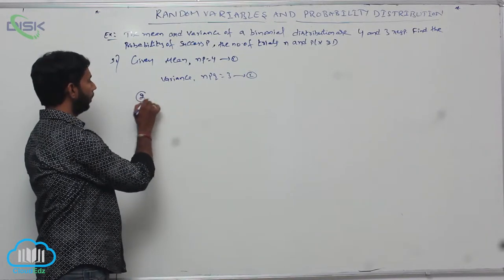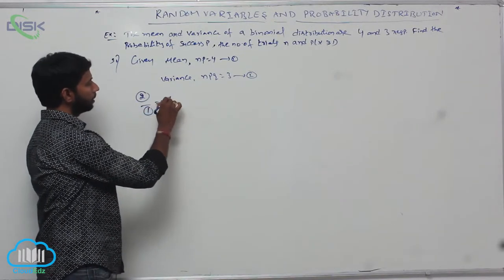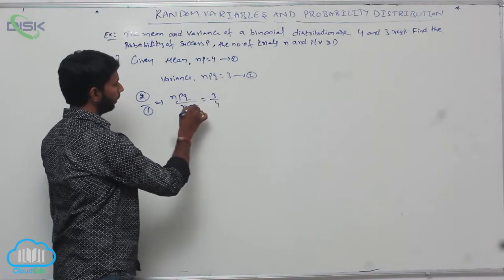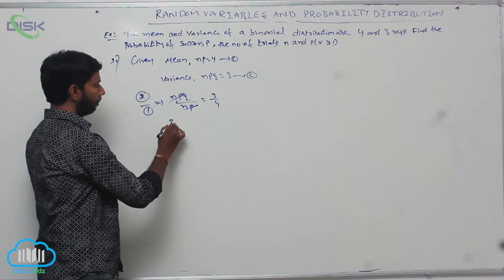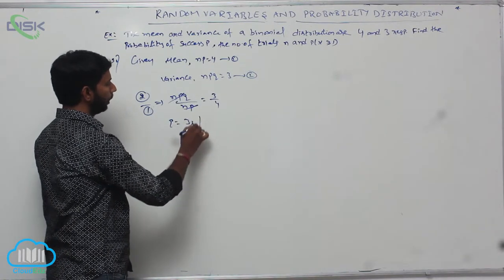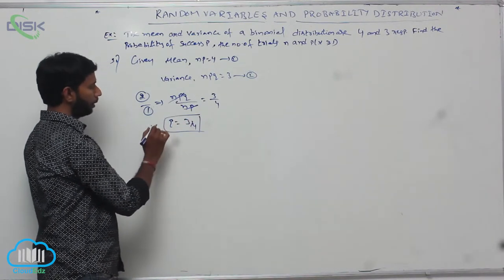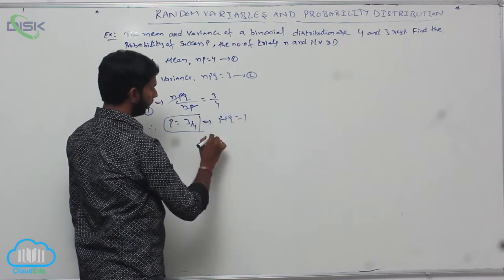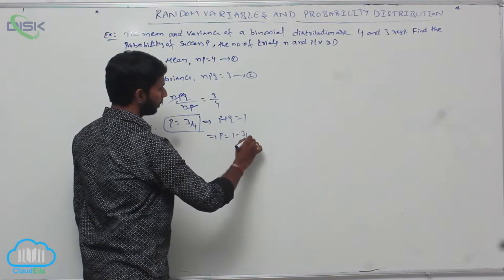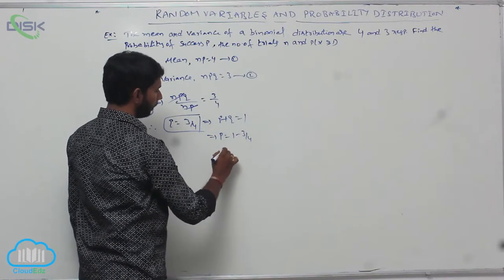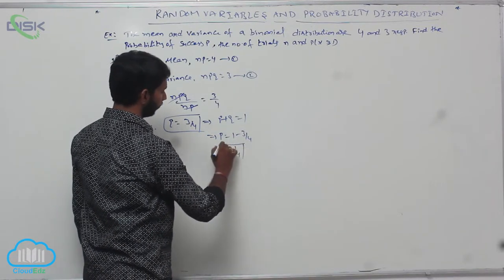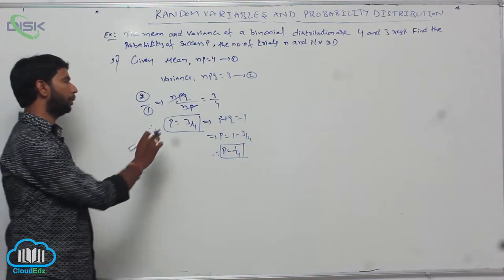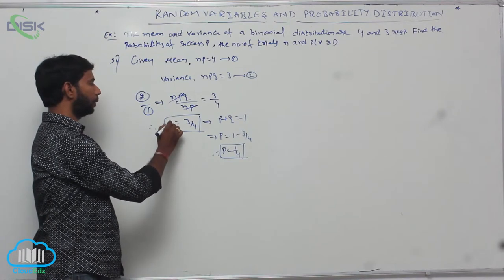Dividing condition 2 by condition 1: NPQ divided by NP equals 3 by 4. NP cancels, giving Q equal to 3 by 4. Since P plus Q equals 1, P equals 1 minus 3 by 4. Therefore, probability of success P is equal to 1 by 4 and Q is equal to 3 by 4.